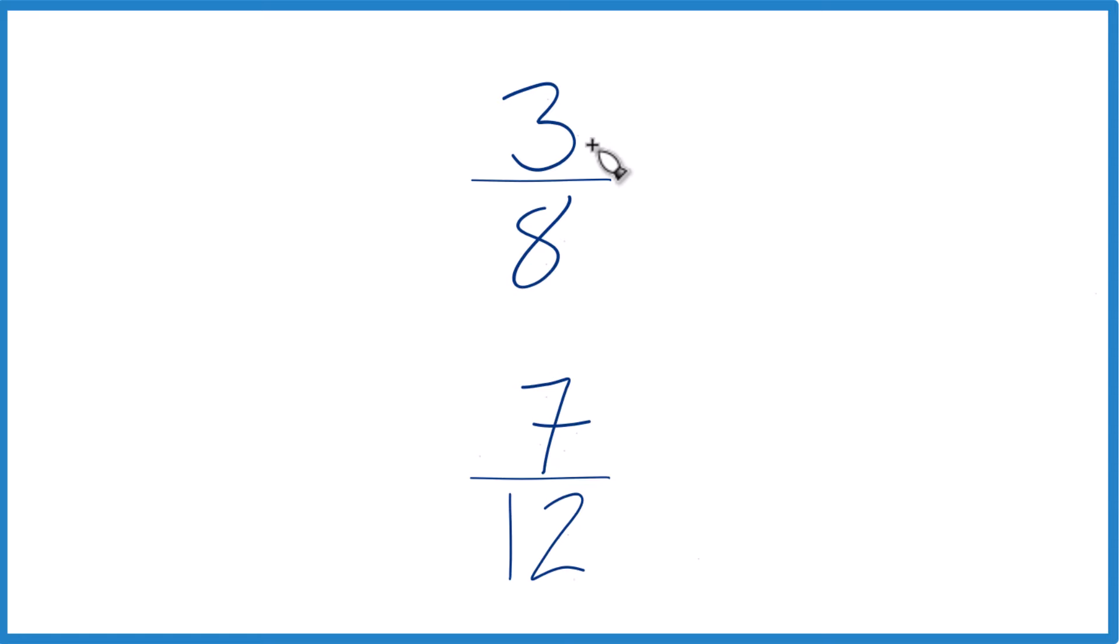The other way is if you just look at this: half of 8 is 4, so 3 is less than half of 8. And half of 12 is 6, so 7 is more than half. You know that 7/12 is going to be larger than 3/8.